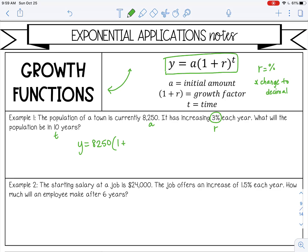And you do that by moving the decimal 2 to the left. Right now it's 3.0%. To change it to a decimal, you move to the left 2, so it would be 0.03. And then our t is 10.